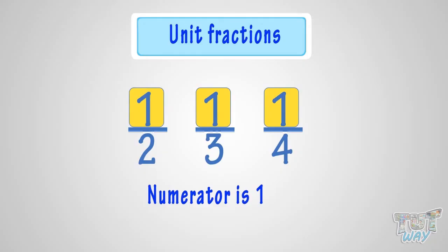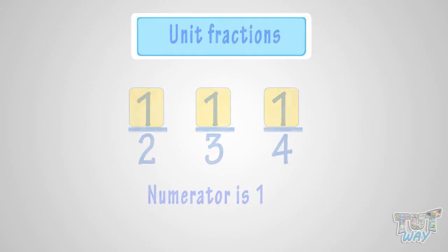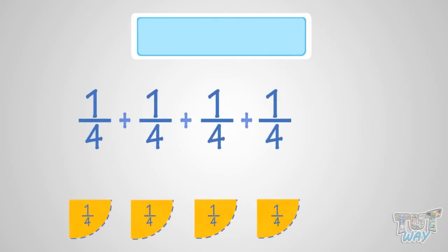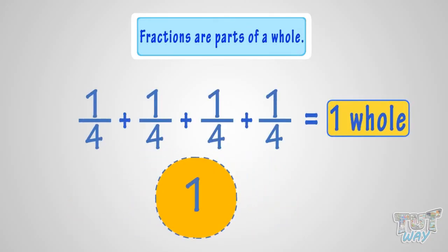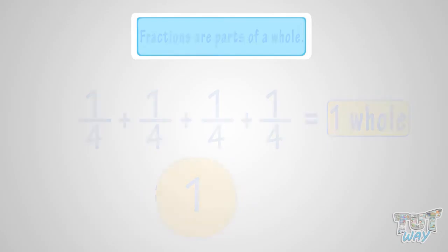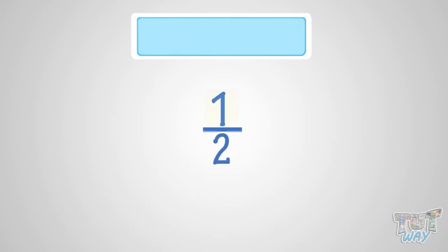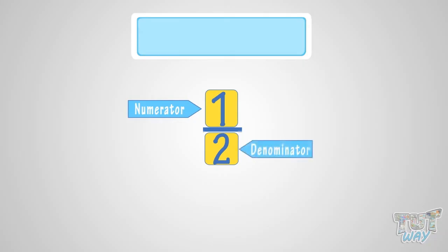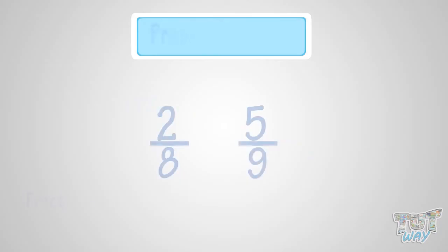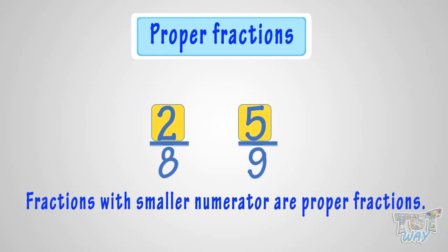Good! So, what have we learned? We have learned that fractions are parts of a whole, and they are represented by two numbers, one above the line and one below the line. The number above the line is the numerator, and the number below the line is the denominator.